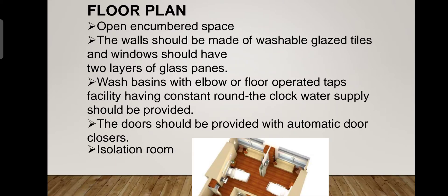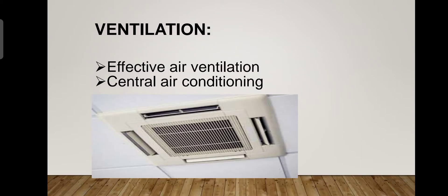For floor planning, there should be open unencumbered space. Walls should be made of washable glazed tiles, and windows should have two layers of glass panes. Wash basins with elbow or foot-operated taps should have round-the-clock water supply. Doors should have automatic self-closers, an isolation room should be available, and there should be effective air ventilation with central air conditioning.